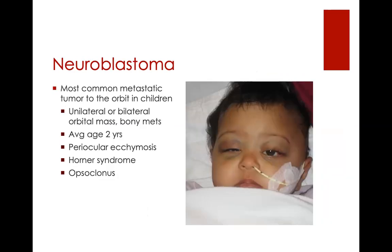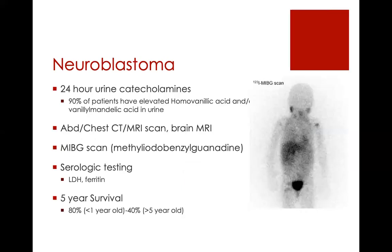Another emergency specific to pediatrics is neuroblastoma — the most common metastatic tumor to the orbit in children. Rhabdomyosarcoma is the most common primary malignancy of the orbit in children. With neuroblastoma you typically get the ecchymotic raccoon-eye appearance, which can be unilateral or bilateral. It can be associated with Horner syndrome as well as opsoclonus, which is a funny eye movement. Get imaging and confirm the diagnosis. It tends to have a better prognosis in younger patients.